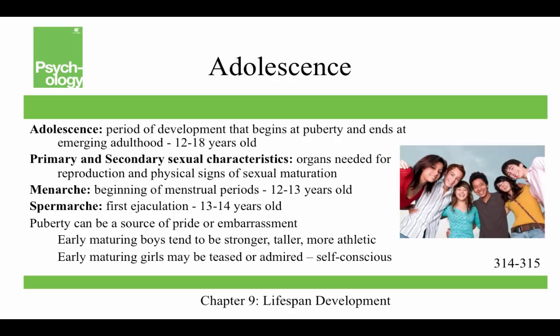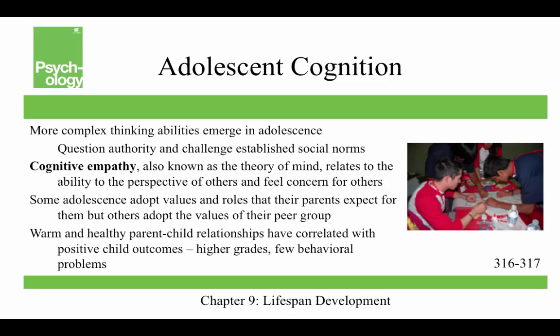Adolescence is a socially constructed concept, usually considered the period from puberty to emerging adulthood, about 12 to 18 years old. This is when primary sexual characteristics — organs needed for reproduction — and secondary sexual characteristics — physical signs of sexual maturation — develop. Menarche, the beginning of menstrual periods, usually occurs between 12 and 13; spermarche, the first ejaculation, usually between 13 and 14. Early maturing boys tend to be stronger, taller, and more athletic. Early maturing girls may be teased or admired, and are more likely to be self-conscious about their development.